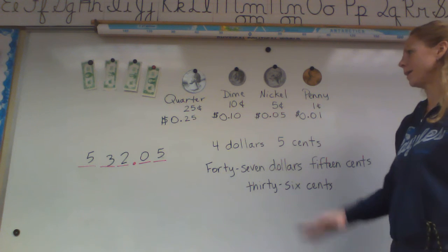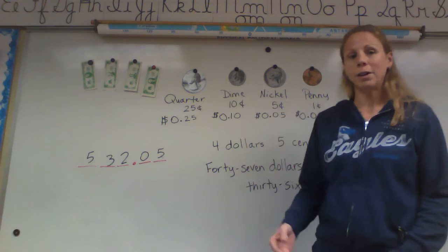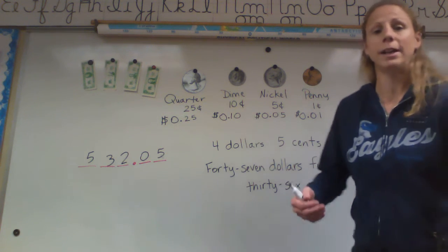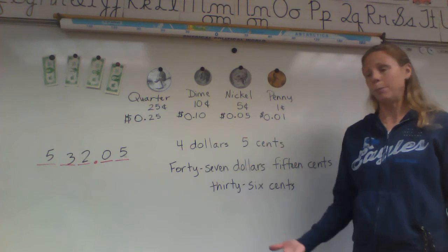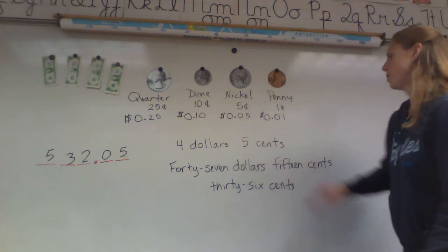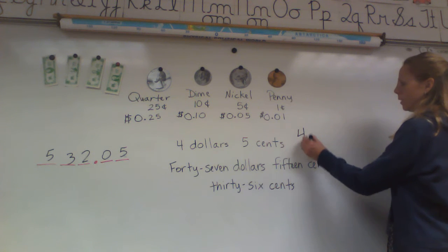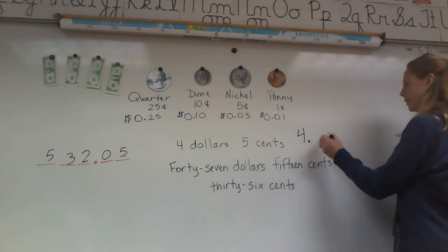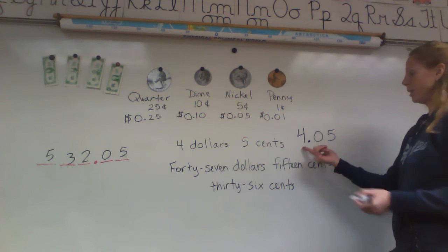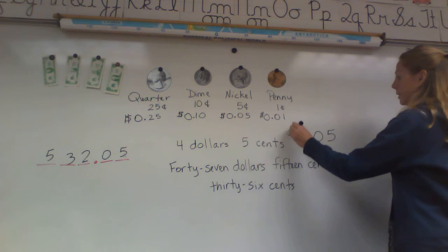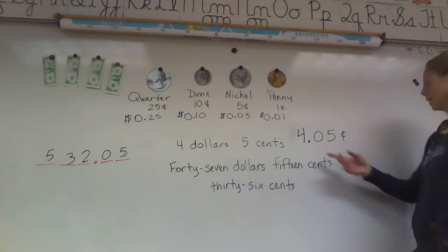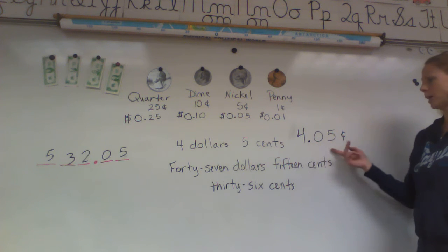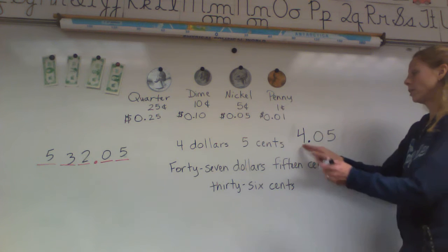In your workbook you're going to find that they write some of these with words and you have to translate it into numbers. So four dollars and five cents would look like $4.05. Since we have dollars in this, you definitely want to write it this way with a dollar sign. You would not want to write it with just a cent mark, because that's going to be a little bit confusing. So since there's dollars, you use the dollar sign.